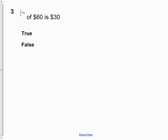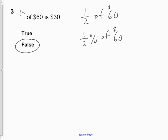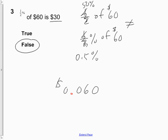Question 3: half a percent of $60 is $30. The answer is false. A half of $60 and a half percent of $60 are not the same thing. A half of $60 is really 50%, whereas a half percent is less than 1%. A lot of people misinterpret a half percent to mean 50%. To find a half percent, you move the decimal three times — once for 10%, twice for 1%, three times for a half percent. So a half percent of $60 is really $0.30, not $30.